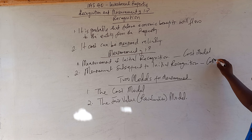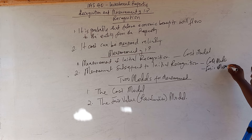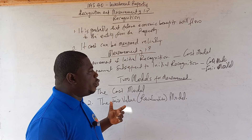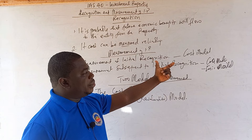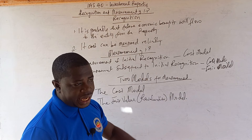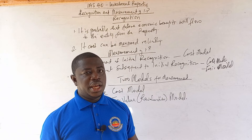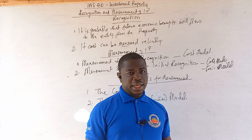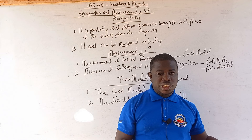At initial recognition it is strictly at cost, but for subsequent recognition you have two options — you either go by the cost model or the fair value model. We will begin with measurement at initial recognition under the cost model, then take a question to solve. When we are done, we will cover subsequent recognition — the fair value model and the cost model — noting that the cost model under subsequent recognition will differ because it involves depreciation, impairment, and other considerations.